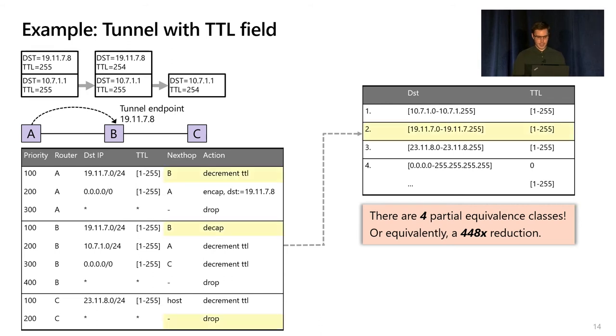If I look at just a single one of these, like this 19.11.7/24 range, you can see that at every node it has the same next hop and the same action applied to it, even though transitively the packets may not stay in that class.